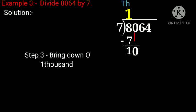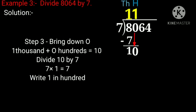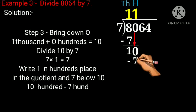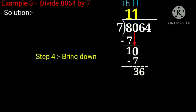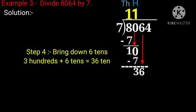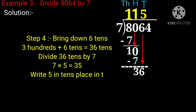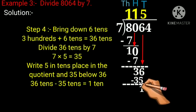Now bring down 0. 1 and 0 will make 10. Divide 10 by 7. We know that 7 ones are 7. Write 1 in hundreds place in the quotient and 7 below 10. 10 minus 7 equals 3. Now bring down 6. 3 and 6 will make 36. Divide 36 by 7. We know that 7 fives are 35. Write 5 in tens place in the quotient and 35 below 36. 36 minus 35 equals 1.